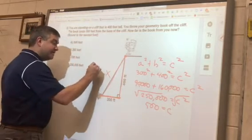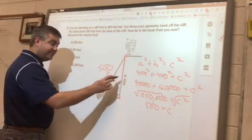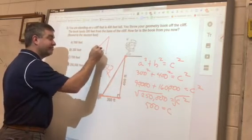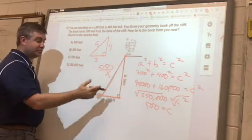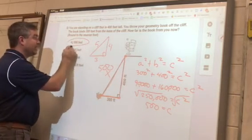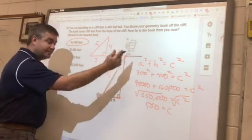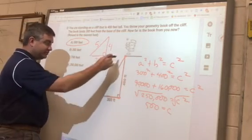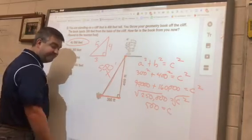Now that means that this hypotenuse right here is 500. If you look closely, 300, 400, 500 is really no different than a 3, 4, 5 Pythagorean triple. I just multiplied each side by 100. So really you could probably look at it and see that the answer was 500. But the Pythagorean theorem proves that the hypotenuse of the geometry book is now 500 feet, 500 feet from where you're at.